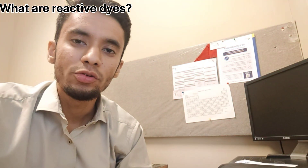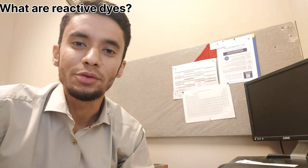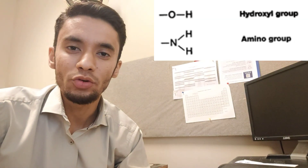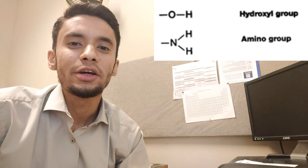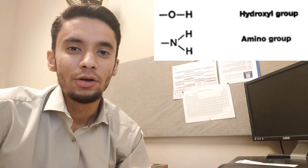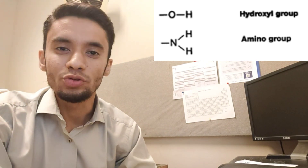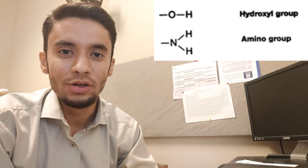Dye molecules which have the ability to make covalent bonds with the substrate are considered to be reactive dyes. Specifically, hydroxyl groups and amino groups are considered to be dye sites for reactive dyes, and they are specifically present in cellulosic, proteinic, and nylon fibers.